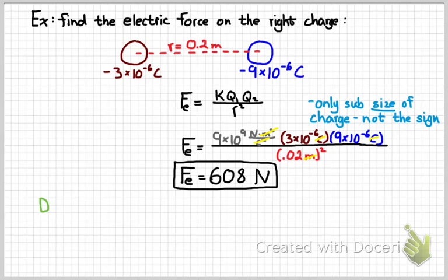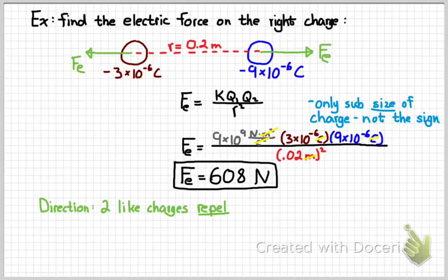That doesn't tell us what direction the force is. To figure out the direction of the force, we need to consider the actual kind of charge that we have. Since these are two like charges, they're going to repel each other. My total answer would be 608 Newtons to the right for the blue charge up there.